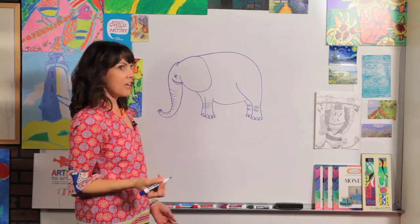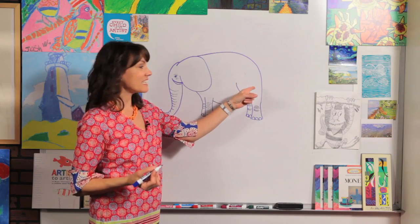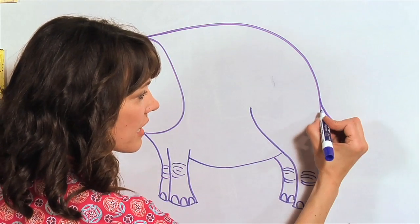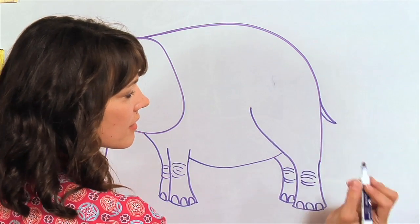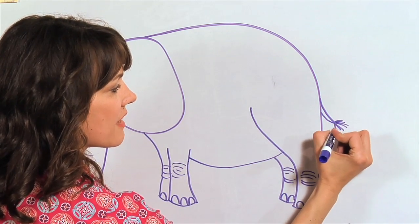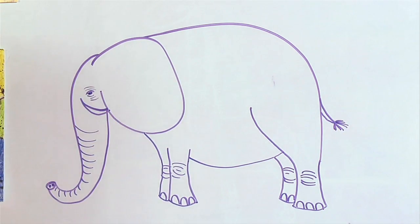Now I'm missing something over here. They have a really little tail, but they do have a tail. So we're going to come out and just draw a really tiny triangle and then just some straight lines for the hair on the end of the tail. Just like that, that come out.